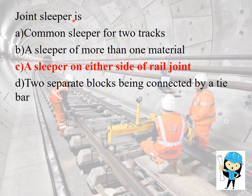The joint slipper is defined as a slipper on either side of the rail joint. It may also be asked as: when the rail ends rest on the joint slipper, then the joint is termed as — the joint is called the supported rail joint. When the rail ends rest on a joint slipper, then the joint is termed as a supported rail joint.